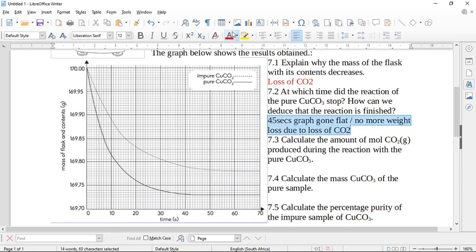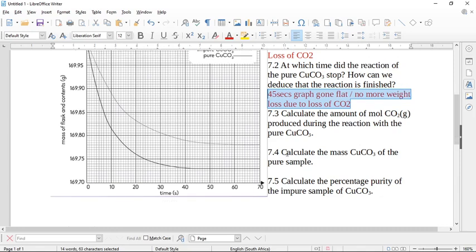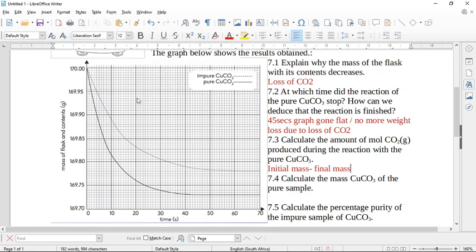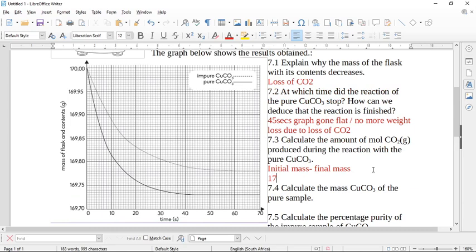Now it says to you, calculate the amount of moles of carbon dioxide gas produced during the reaction with pure copper carbonate. So to do this, we actually have to look at the graph and we have to go initial mass minus the final mass. And my initial mass is 170 grams.